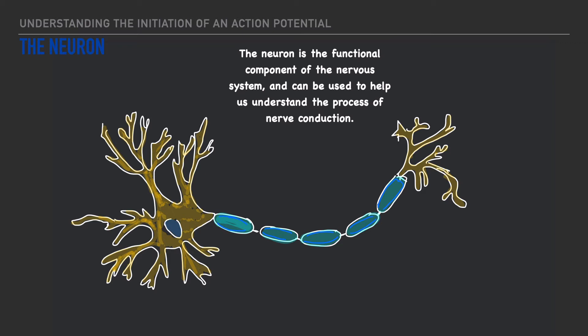So first up labeling from left to right we have dendrites and dendrites are specialized structures that receive chemical signals from other neurons.